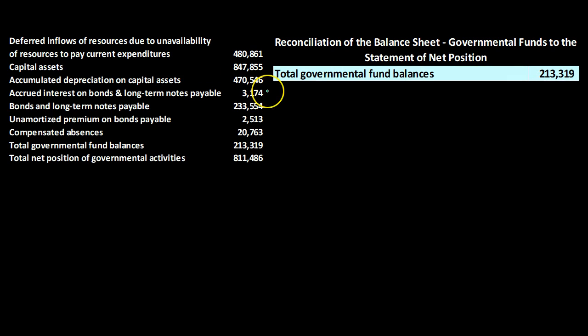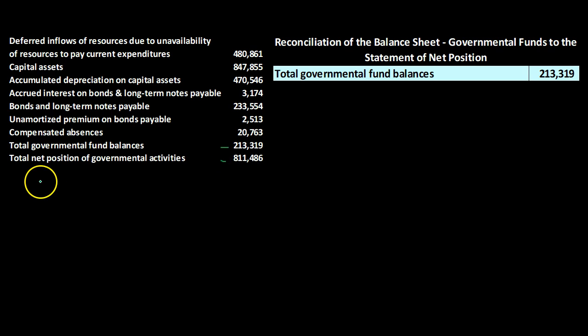We're going to start off with the total governmental fund balances, which from our data is 213,319 — that comes straight from the financial statements. We expect to end at the total net position of the governmental activities, and all we're going to do is identify the differences resulting from the accrual basis versus modified accrual basis.